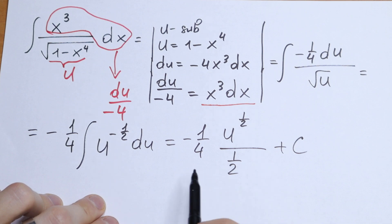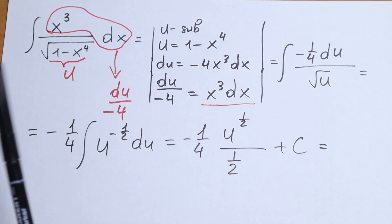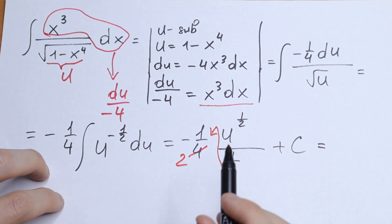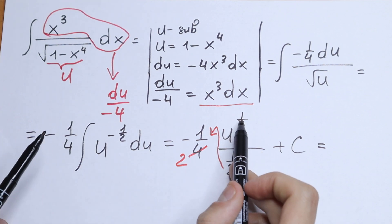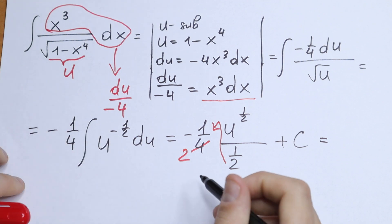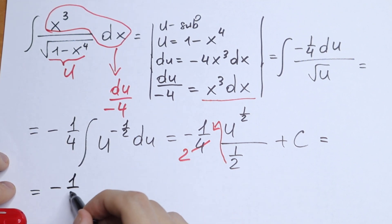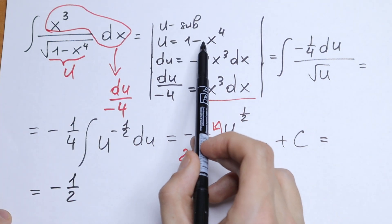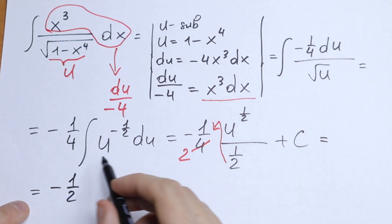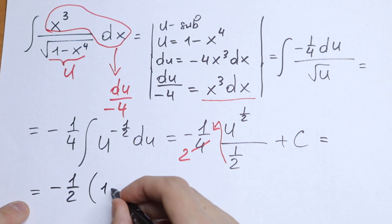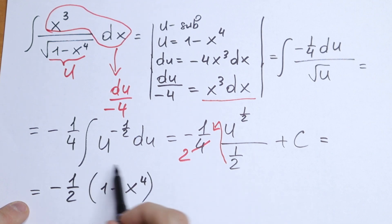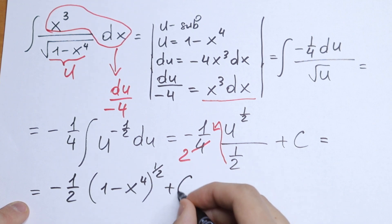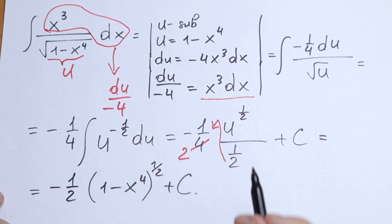Let's simplify. The 2 from dividing by 1 half cancels with the 4 in the denominator, leaving minus 1 half. So we have minus 1 half times u to the power 1 half, and substituting back, u equals 1 minus x to the fourth power. The final answer is minus 1 half times (1 minus x to the fourth power) to the power 1 half, plus C.